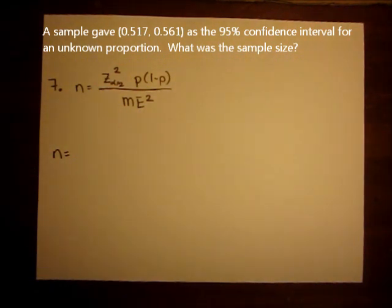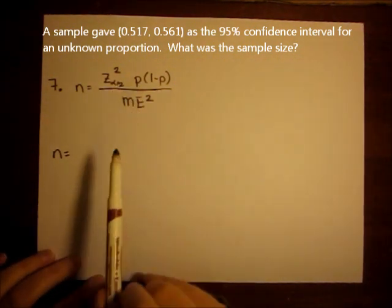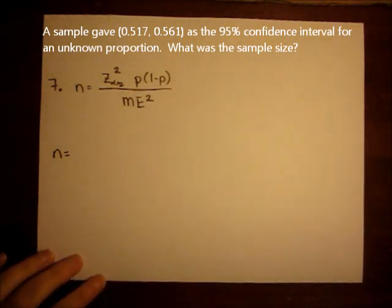So we need three different parts of the formula to plug in. We need the z alpha over 2, we need to know what p is, and we need to know the margin of error.